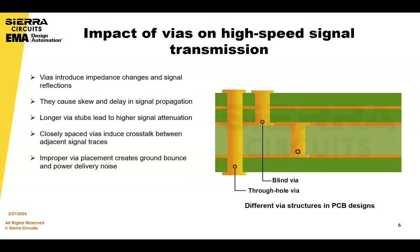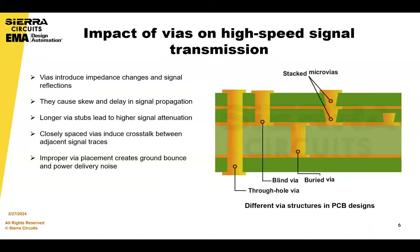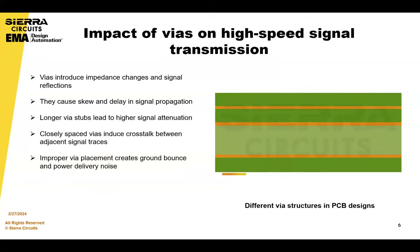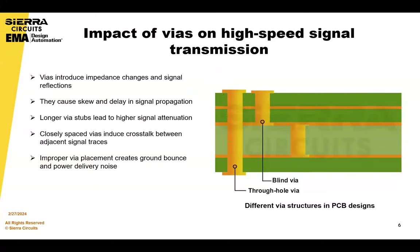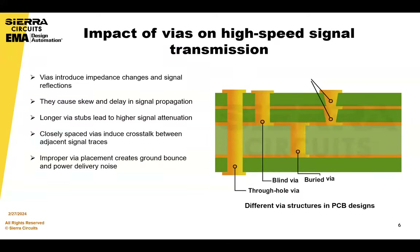Due to variations in VIA geometries and placements, the signals traveling through these different VIAs may experience skew, resulting in discrepancies in arrival times. Longer VIA stub lengths can introduce additional resistance and capacitance, leading to higher signal attenuation. And when VIAs are closely spaced, the EM fields generated by adjacent signal traces can interfere with each other, inducing crosstalk.